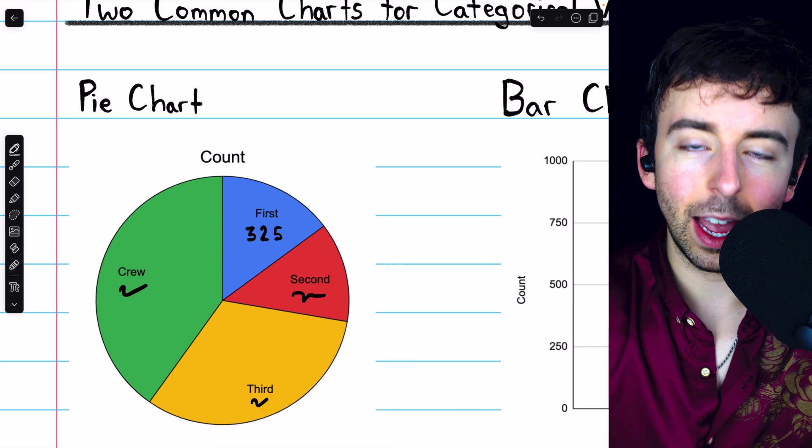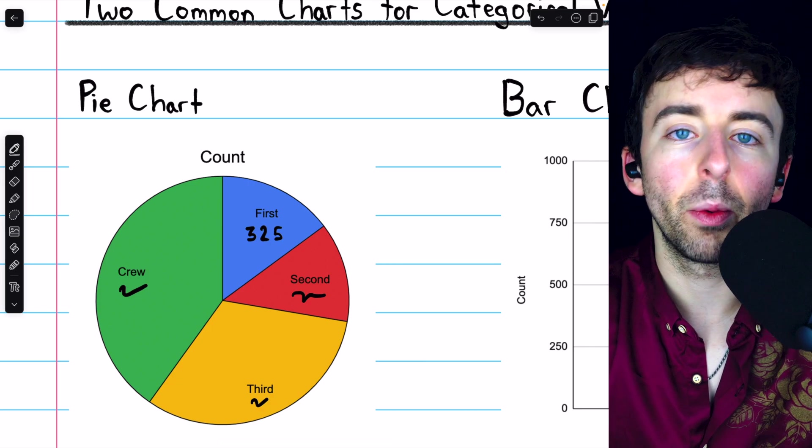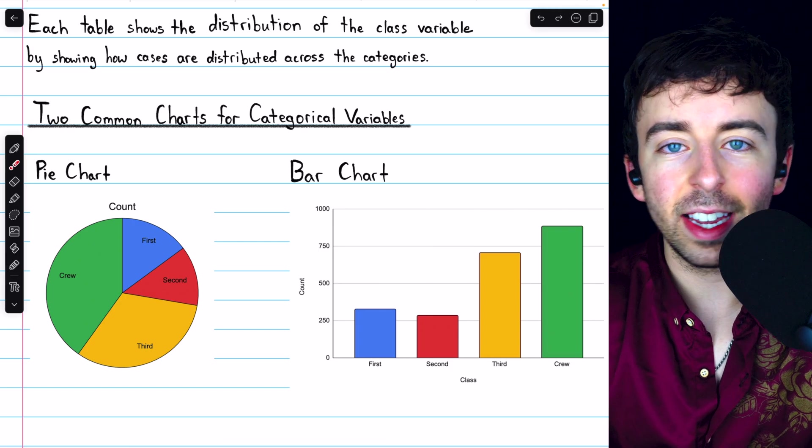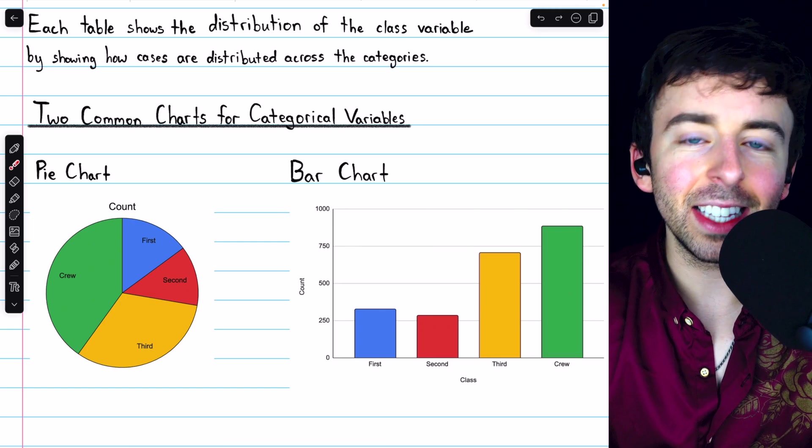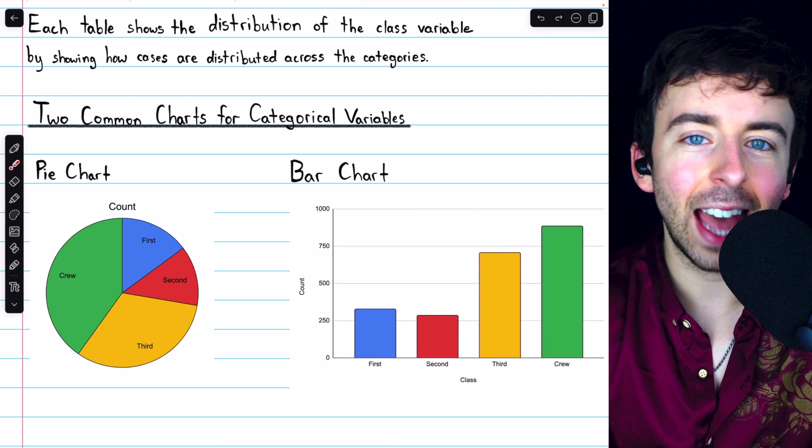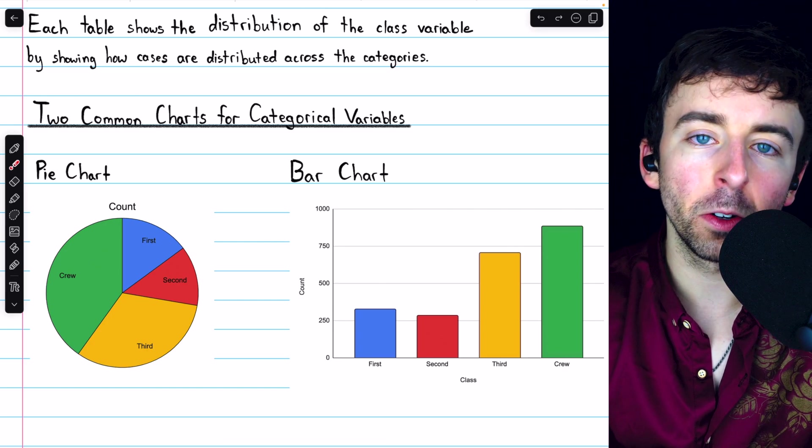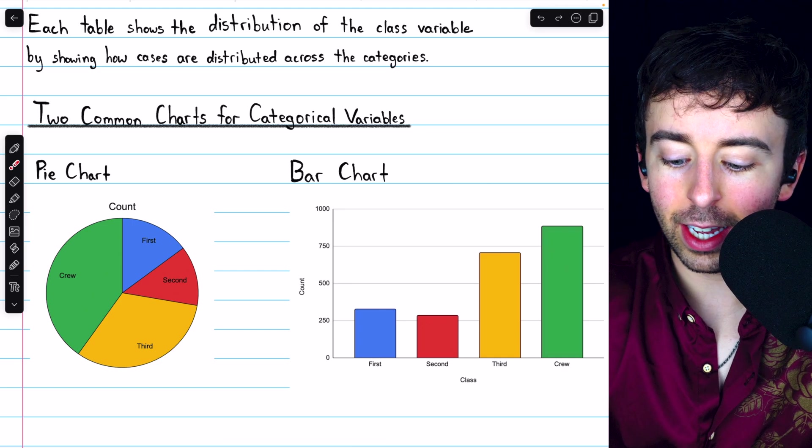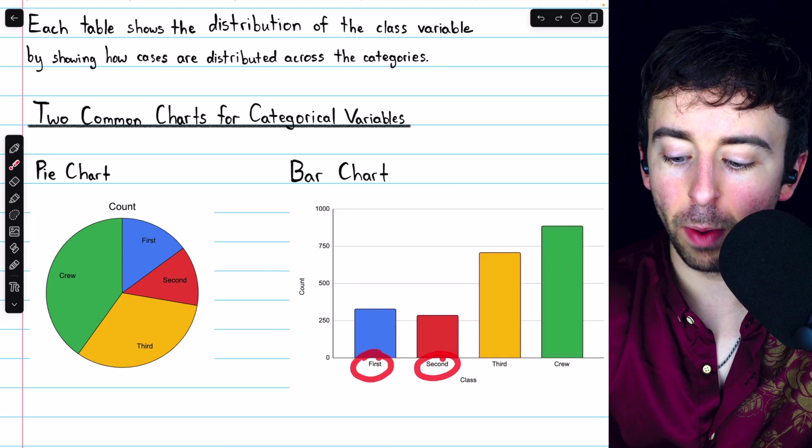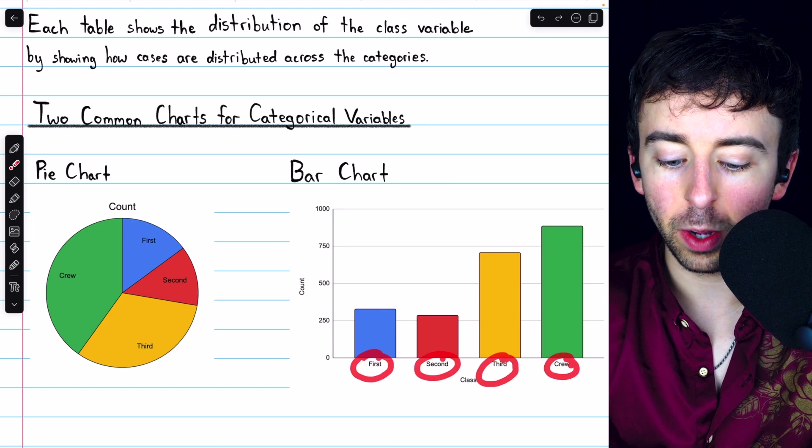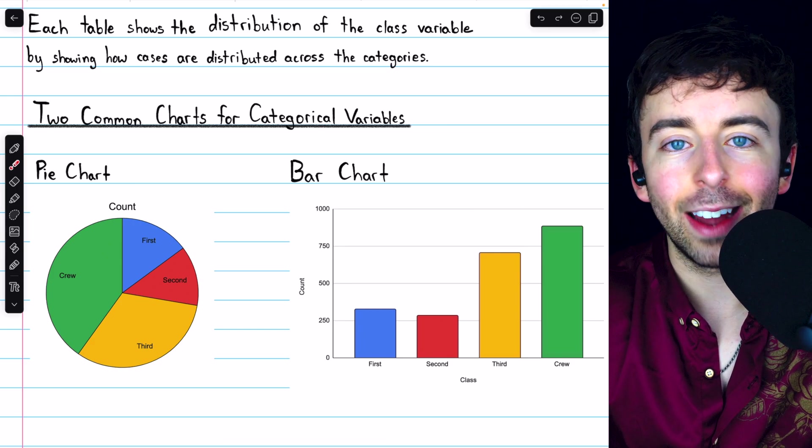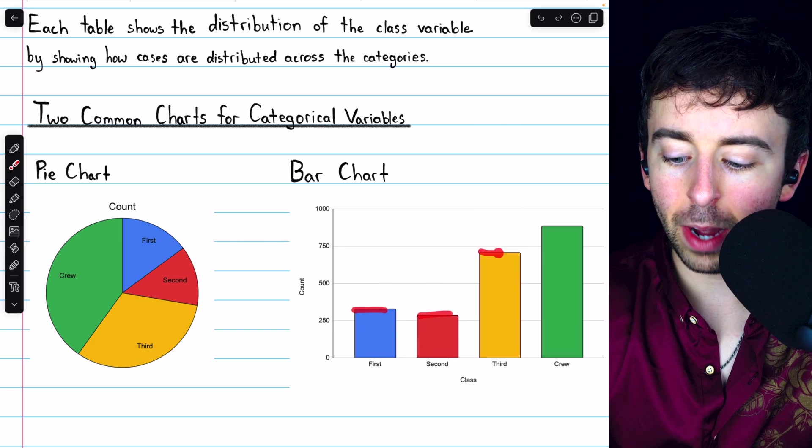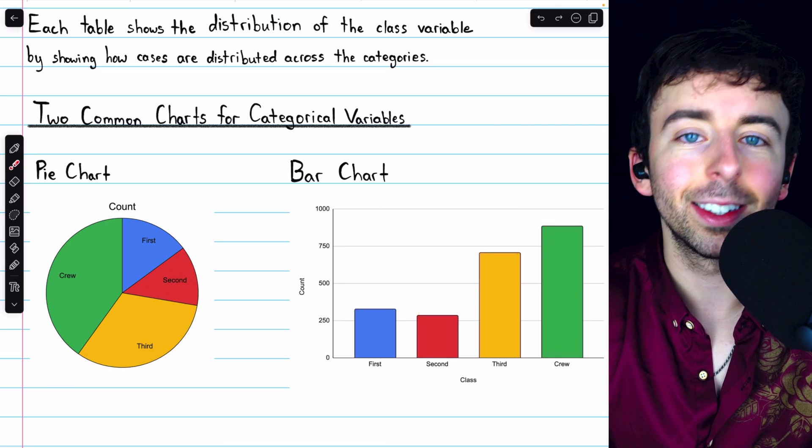The bar chart very visually separates each category from the others, and it makes it a little easier to compare category to category, although it's a little harder to compare each category to the whole. You can see that each category gets its own bar: first, second, third, and crew, just like in a pie chart, each category gets its own slice. The height of each bar is determined by the number of individuals that belong to the category.